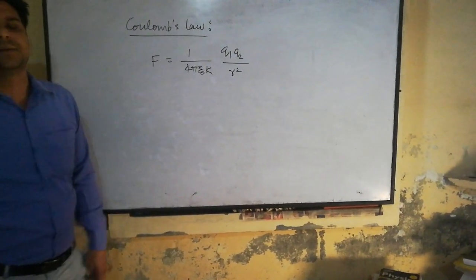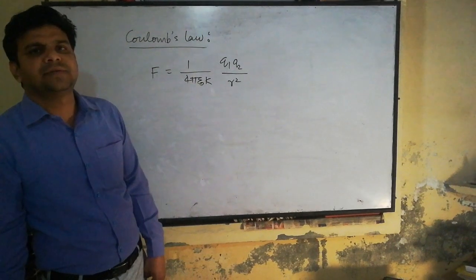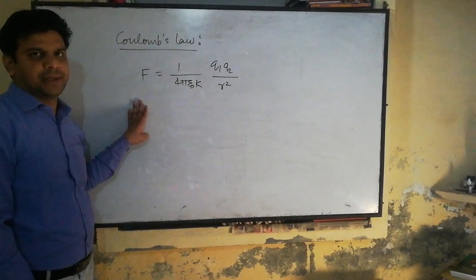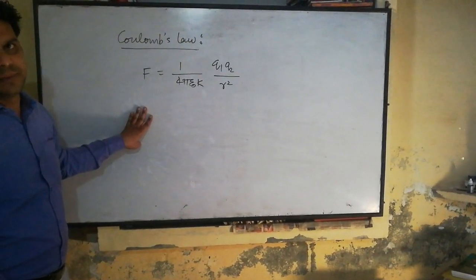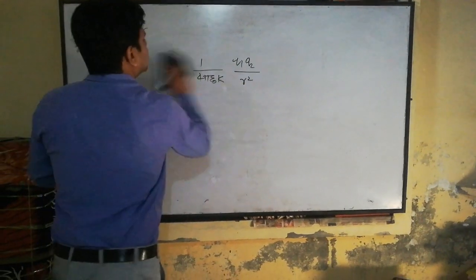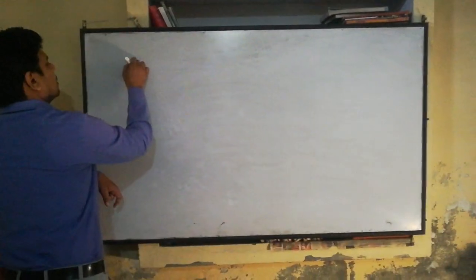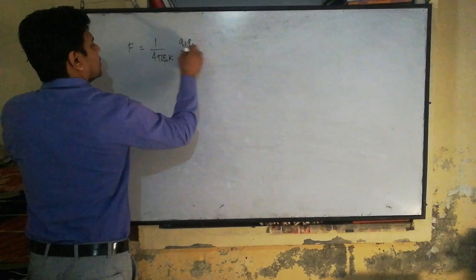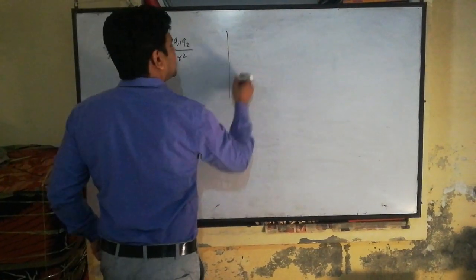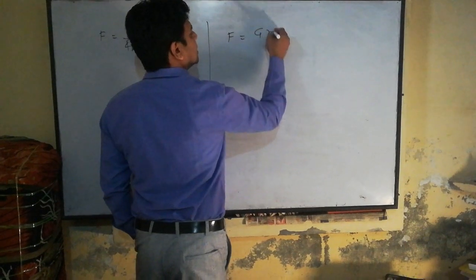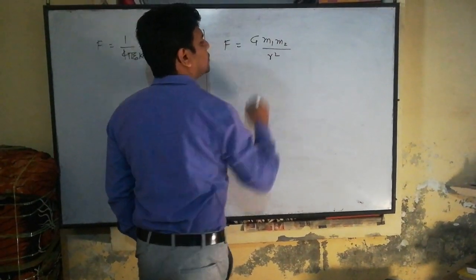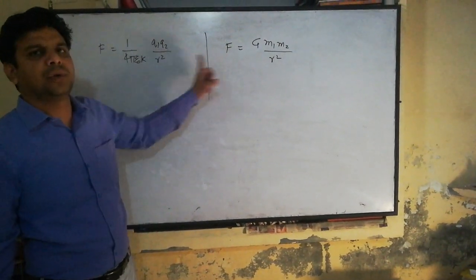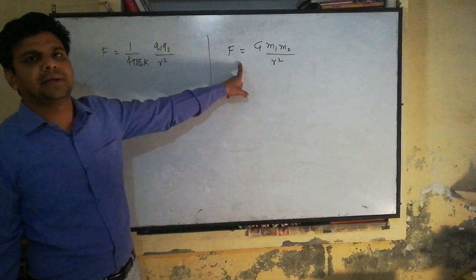In 11th class, you studied Newton's gravitational law. Both laws are quite similar in some ways, but there are also some differences. Coulomb's law of electrostatics gives F proportional to Q1 Q2 over R squared, while Newton's gravitational law gives F equals G times M1 M2 over R squared. Both formulas are very similar in structure.